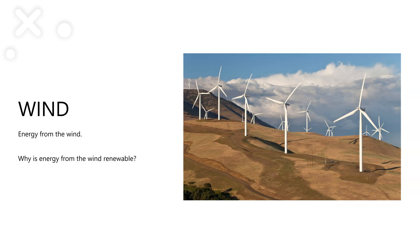Wind is another renewable energy source. You see wind propellers all over places like Alameda Pass and Chaco Pass. They absorb wind energy that comes through these narrow passes, where air flows because of the geography. Wind is renewable because we can constantly absorb energy from it — wind won't run out because it's driven by air pressure, and as long as air pressure continues to fluctuate in the atmosphere, we can use wind energy.